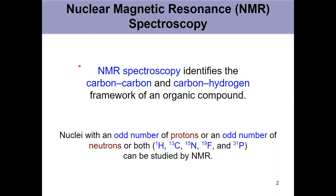We can get information about individual atoms and the atoms that neighbor those atoms as well. So we're going to talk about NMR spectroscopy that identifies carbon-carbon framework, how all the carbons are bonded together, and carbon-hydrogen framework. But that's not the only thing that NMR can do.